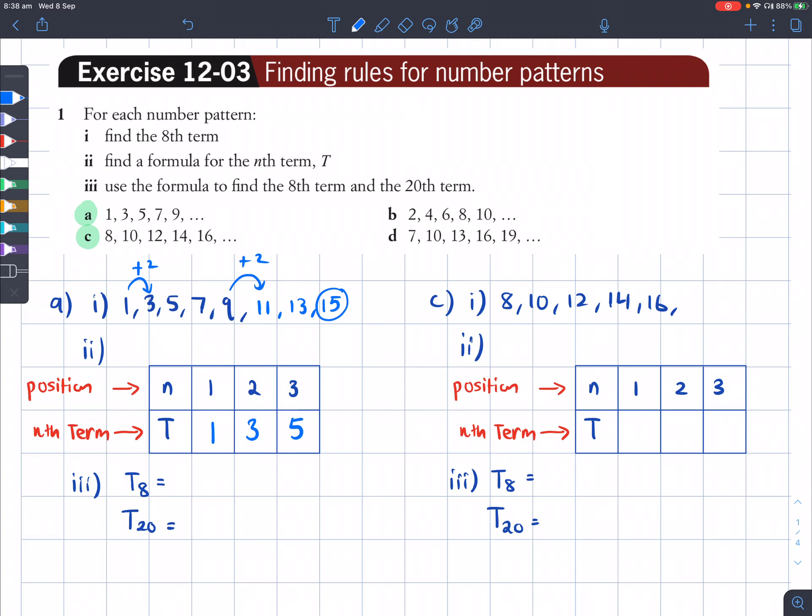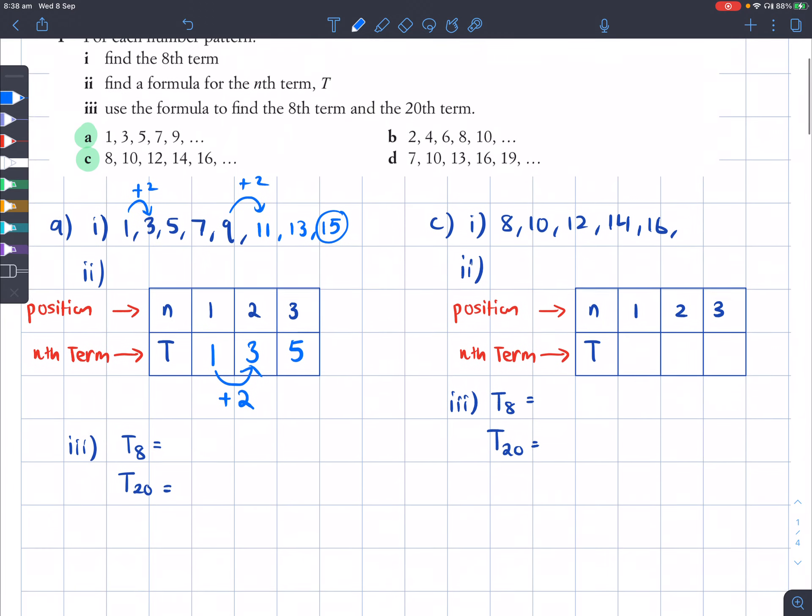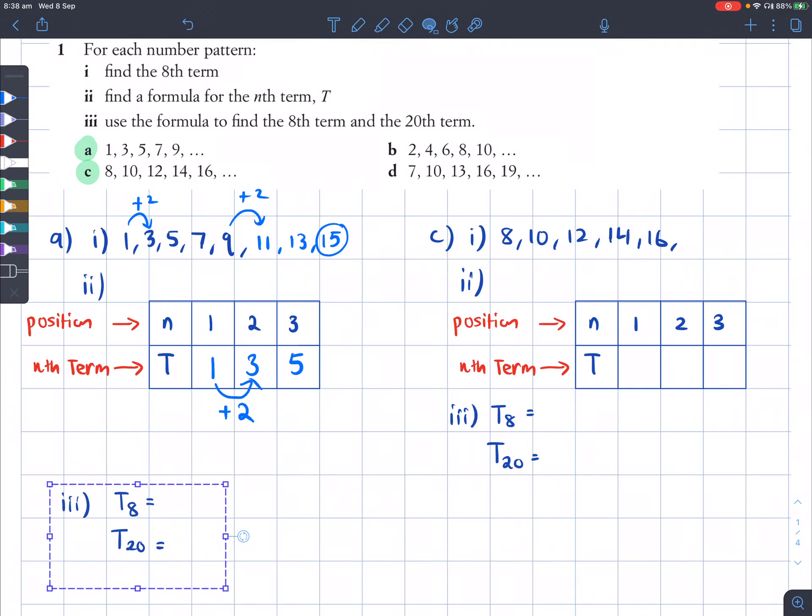Now, what I'm going to do is from this table of values, I'm going to generate the rule. To do that, we look at what is it going up by at the very bottom from term to term, which we know was 2 before. And what we say is the rule is going to be T is equal to 2n. But then there's a little something after that, which we don't know.